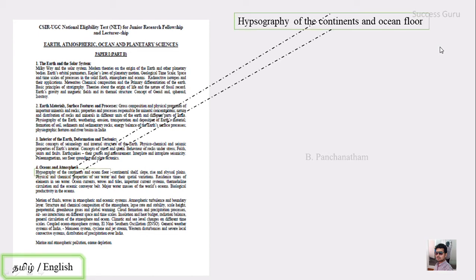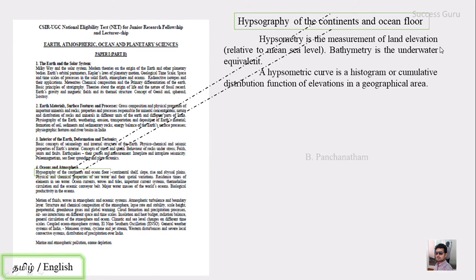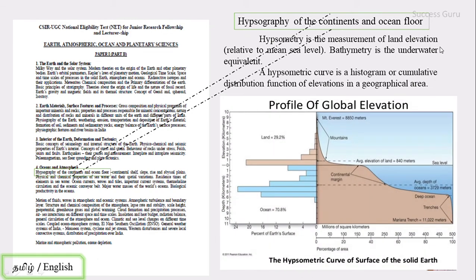For today's video, we are in Part B — the oceanography portion — and the topic is hypsography of continent and oceanic floor. Hypsography is the measure of land elevation from the mean sea level. The same thing is called bathymetry when you are measuring downward from the mean sea level. The hypsometric curve is a histogram or cumulative distribution function of elevation of a geographical area.